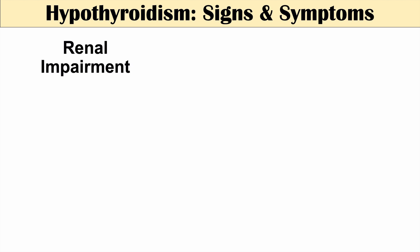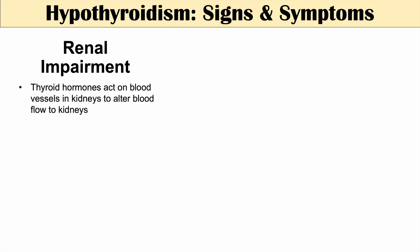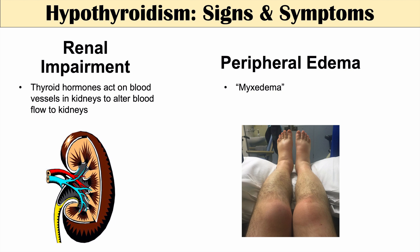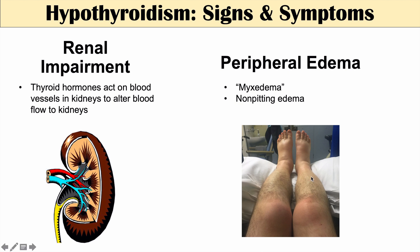We can also see renal impairment in hypothyroidism, as thyroid hormones act on blood vessels in the kidneys to alter blood flow. Additionally, peripheral edema can occur — called myxedema when due to hypothyroidism. This is non-pitting edema, meaning it is very tense swelling, and if you push your finger into the affected area, particularly in the legs, it does not leave a pit as pitting edema would.